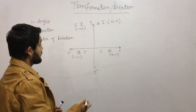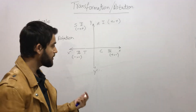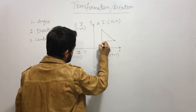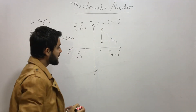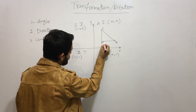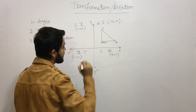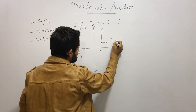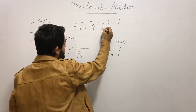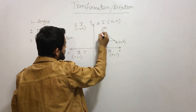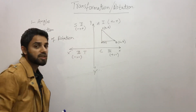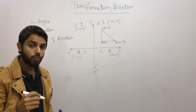Now I am going to take a random right-angle triangle. The coordinates are A, B, and C. Point A is at (3, 2), point B is at (6, 2), and point C is at (3, 6). These are the three coordinates of triangle ABC.